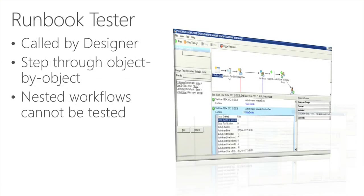The runbook tester is called by the designer — there is a button in the designer where you're able to start it. It gives you a step-through, object by object, within your workflow, so you're really able to debug your workflow and see each activity and the data that is part of it. The only limit is that nested workflows cannot be tested here.